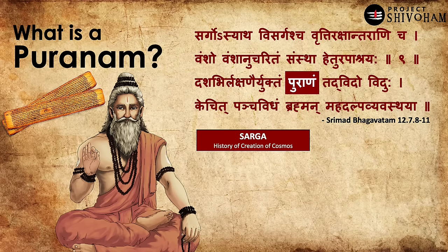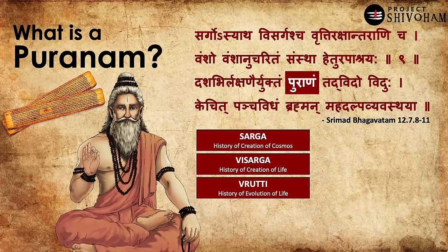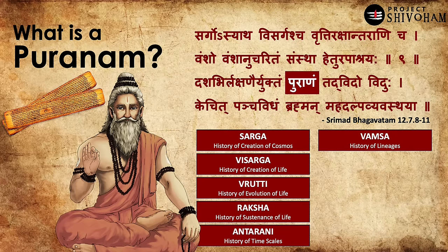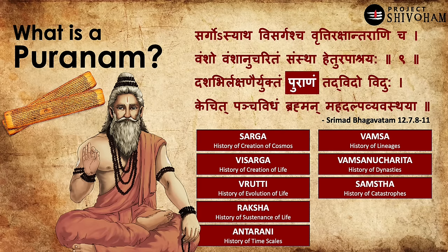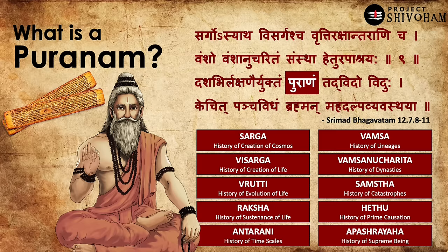The 10 characteristics are: 1) Sarga — history of the creation of cosmos; 2) Visarga — history of the creation of life; 3) Vratti — history of the evolution of life; 4) Raksha — history of the sustenance of life; 5) Antaraani — history of the timescales; 6) Vamsha — history of the lineages; 7) Vamshanu Charita — history of the dynasties of kings; 8) Samstha — history of the catastrophes; 9) Hetu — history of the prime causation; 10) Apashrayaha — history of the supreme being. If a scripture has these 10 qualities — recording history over these aspects over millions of years in terms of Mahayugas and Kalpa cycles — it is called a Puranam.